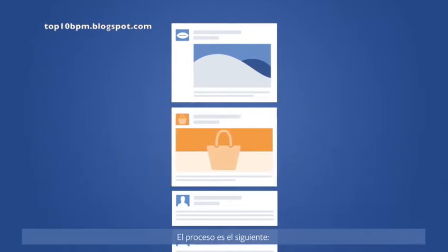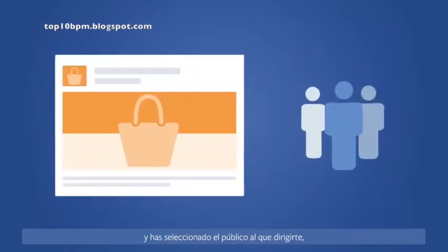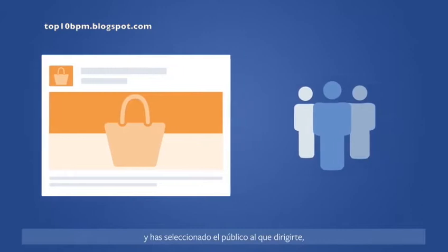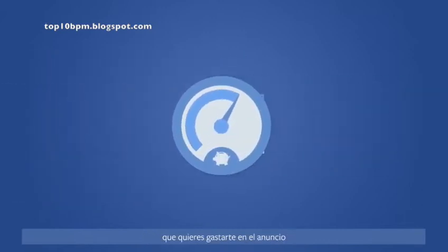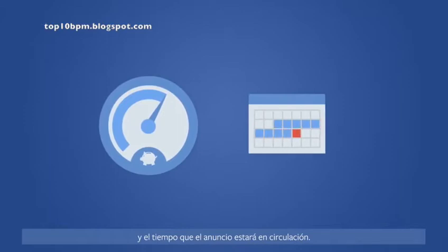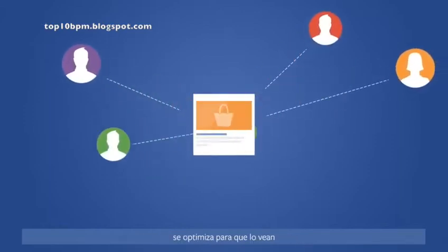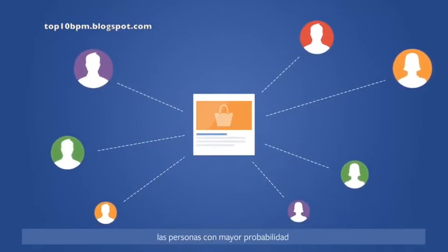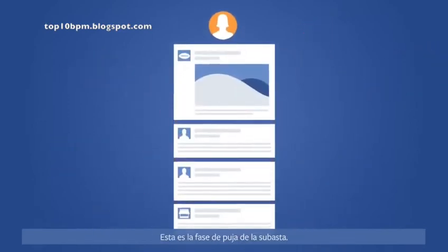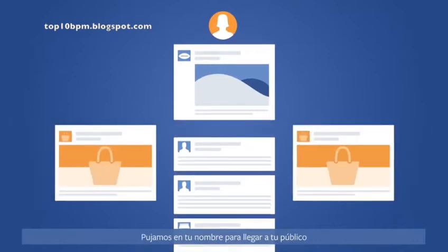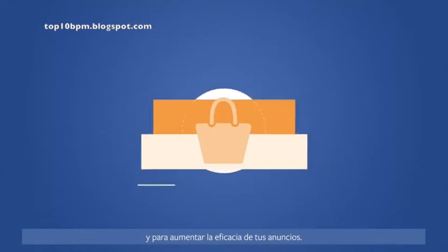It works like this. After you've created an ad and chosen the audience you want to reach, you'll choose a budget for the total amount you want to spend on your ad and how long you want your ad to run. By default, we'll optimize your ad to reach people who are likely to be interested and take action. This is the bidding part of the auction.